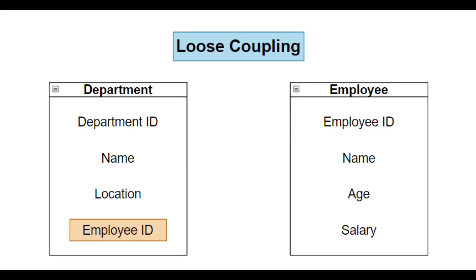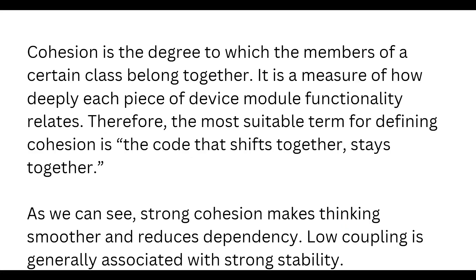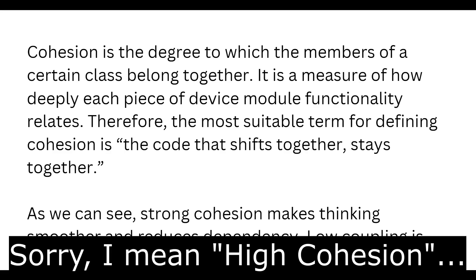That was all on coupling. The second question is: what is cohesion? Cohesion is the degree to which the members of a certain class belong to each other — it is a measure of how deeply each piece of a module's functionality relates. The most suitable term for defining cohesion is: the code that shifts together stays together. In layman's terms, if your class has one functionality that is unrelated to all the others, then your class has low cohesion.